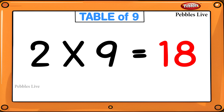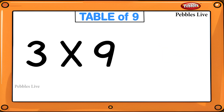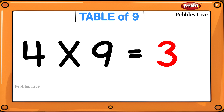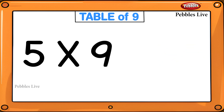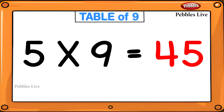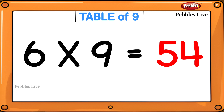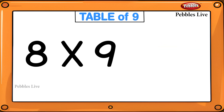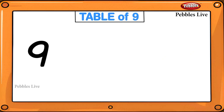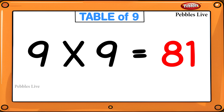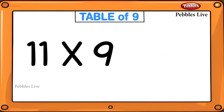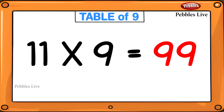1 nine is 9, 2 nines are 18, 3 nines are 27, 4 nines are 36, 5 nines are 45, 6 nines are 54, 7 nines are 63, 8 nines are 72, 9 nines are 81, 10 nines are 90, 11 nines are 99, 12 nines are 108.